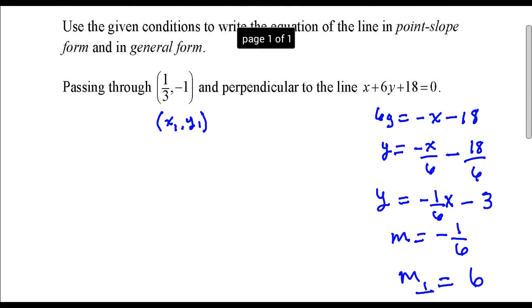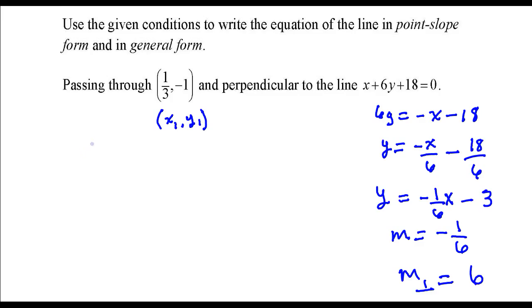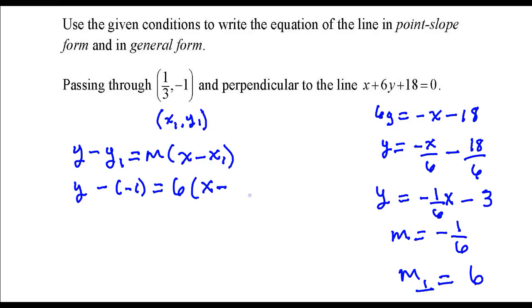So the first thing I'm going to do is write the point-slope form of the line, and this is the formula: y minus y1 is slope times x minus x1. So I have everything I need to write the point-slope form. y minus y1, that's negative 1, is equal to the slope times x minus x1, which is 1 third. So this is y plus 1 is equal to 6 times x minus 1 third. This is point-slope form.